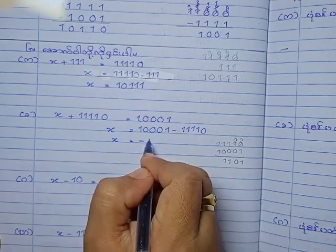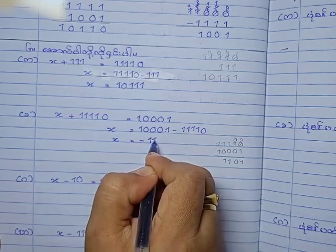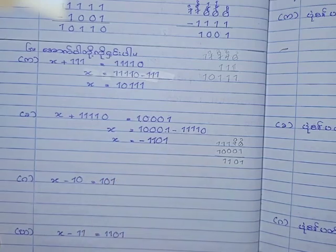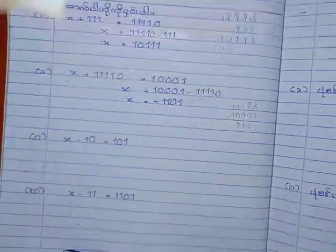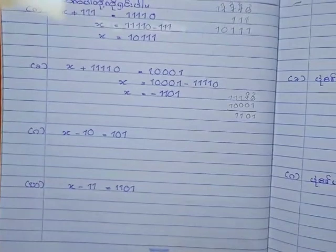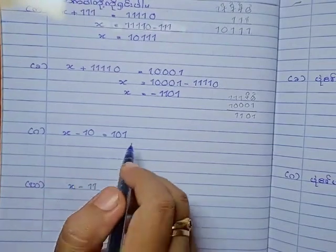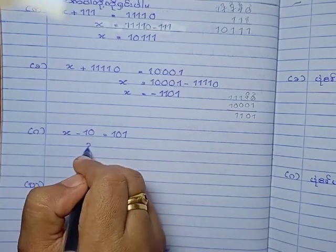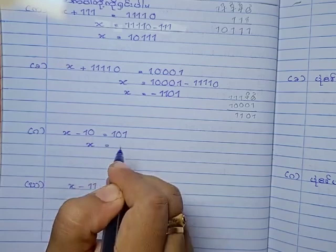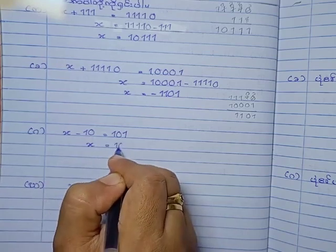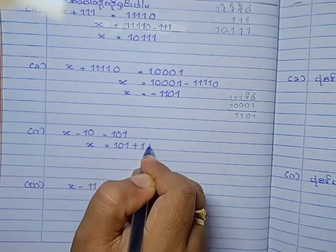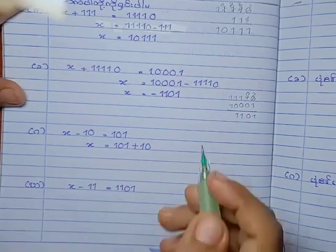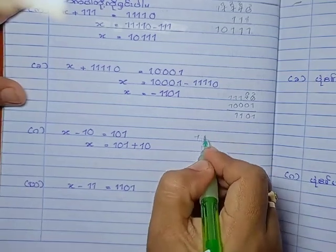Going forward, it says we need to make one more. S minus 10 equals 10. We need to make one more. 105. 10, 10, 10.